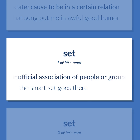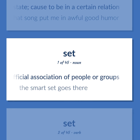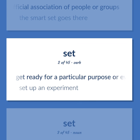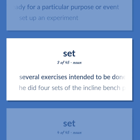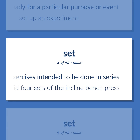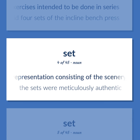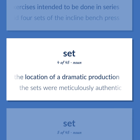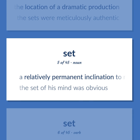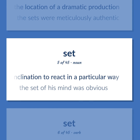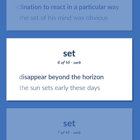Set: An unofficial association of people or groups — the smart set goes there. Get ready for a particular purpose or event — set up an experiment. Several exercises intended to be done in series — he did four sets of the incline bench press. Representation consisting of the scenery and other properties used to identify the location of a dramatic production — the sets were meticulously authentic. A relatively permanent inclination to react in a particular way — the set of his mind was obvious. Disappear beyond the horizon — the sun sets early these days.